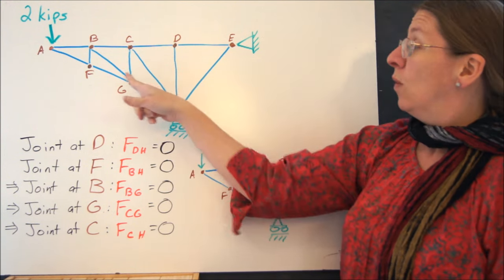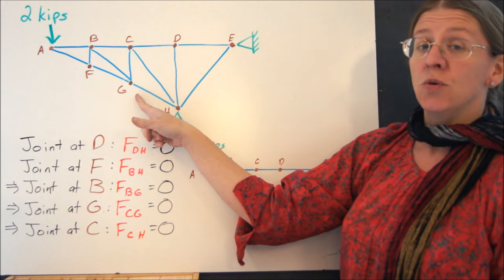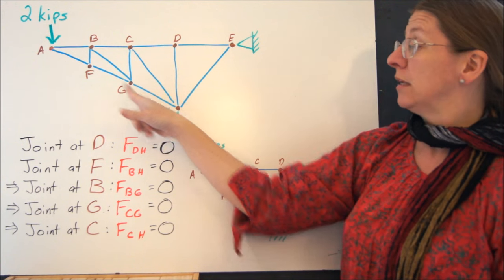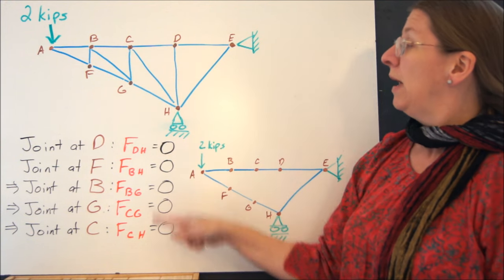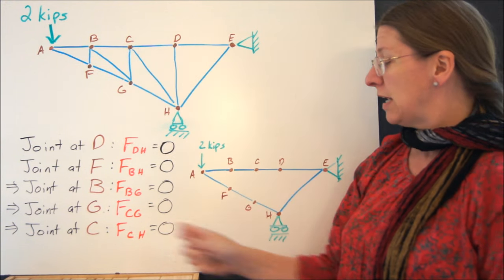And then you go again. Once you know that BG is zero, look at the joint at G. Now it only includes FG, GH, and CG. So that one has to be zero. And you go up to C, and now this one has to be zero.